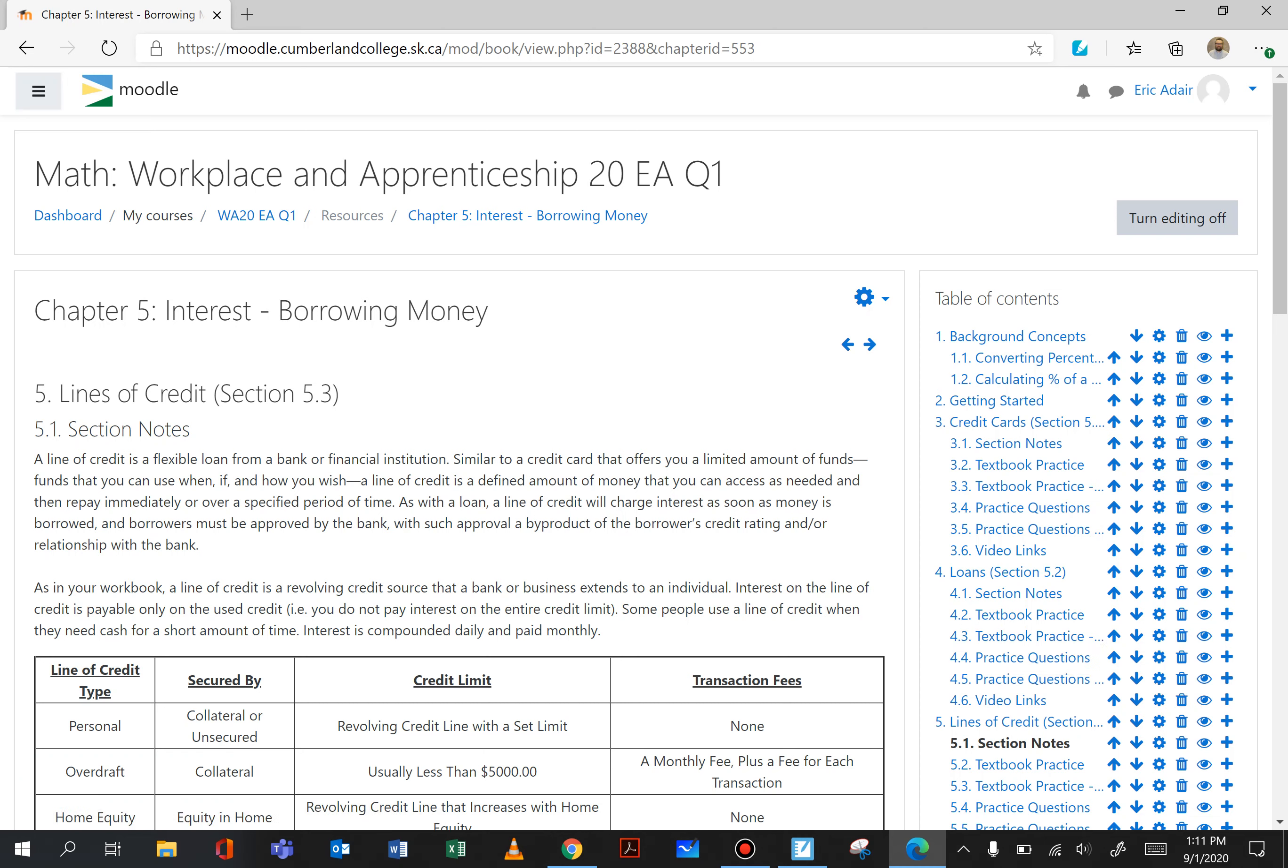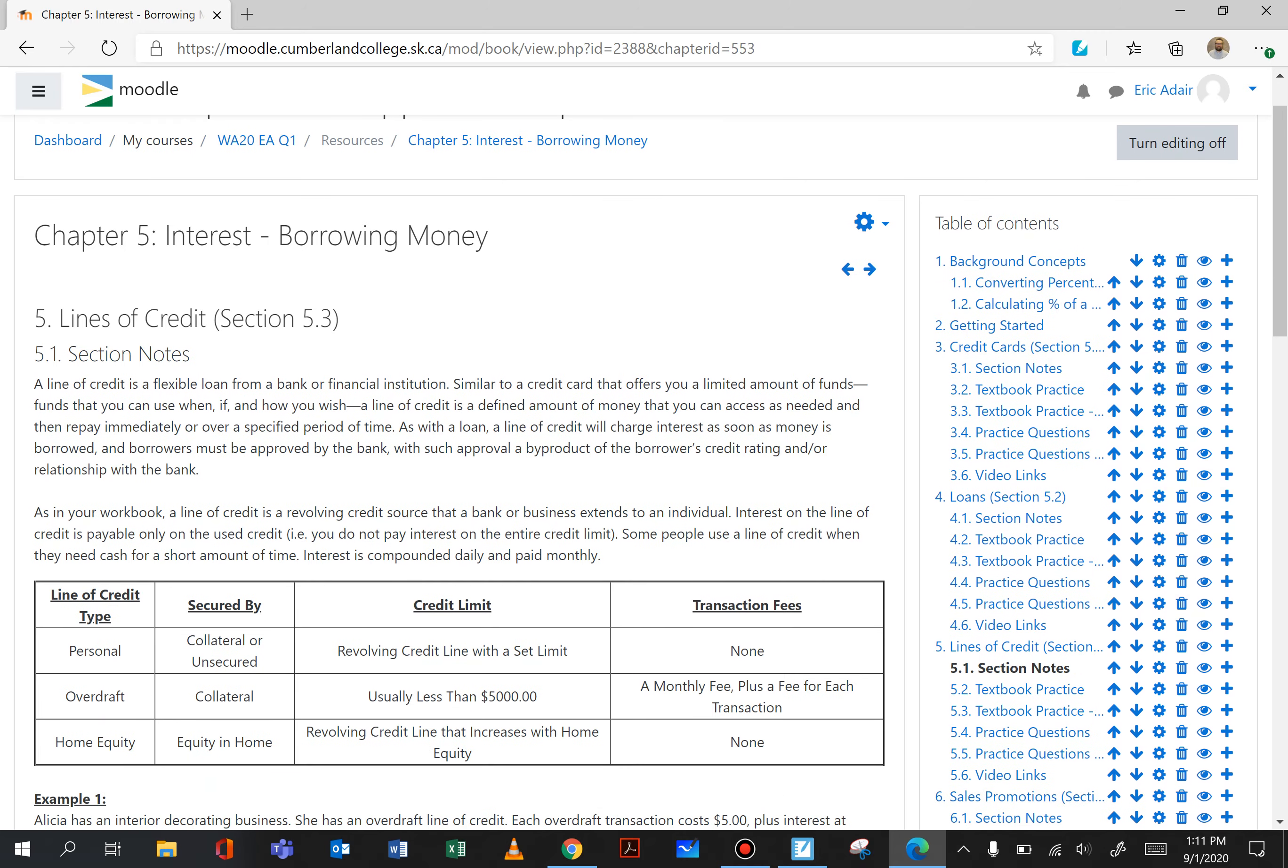So with a line of credit we could have transaction fees where we are borrowing just a little bit with an overdraft for instance. Every time you make a transaction into your overdraft there could be a fee associated with that. When we talk about a line of credit we're talking about a flexible loan from a bank or financial institution, flexible because we can use as much or as little of it as we require.